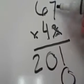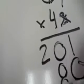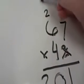4 times 7 is 28. Put my 8 down here and carry my 2 up here.